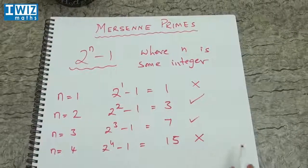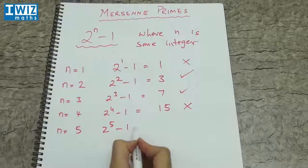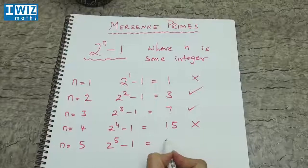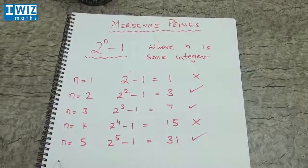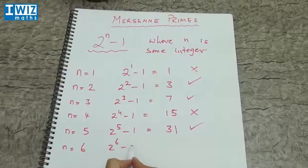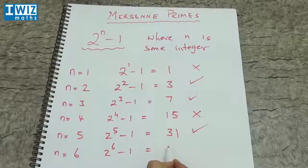n is equal to 5, so you have 2 to the 5 minus 1, which is 32 minus 1, which is 31, which is a prime number. n is equal to 6, gives us 2 to the 6 minus 1, which is 64 minus 1, is 63, which is not a prime.